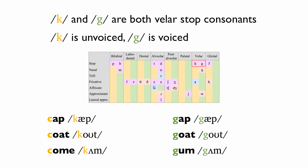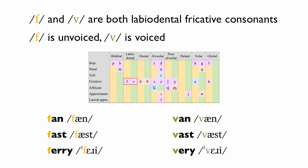Come. F and V are both labiodental fricative consonants. F is unvoiced. V is voiced. Fan — Van. Fast — Vast. Fairy — Very.